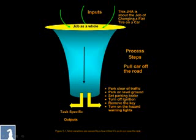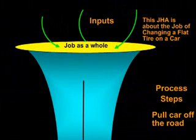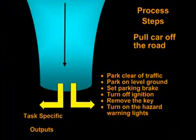A second way of looking at the funnel is that the job as a whole has a number of inputs required. In this case, we're talking about changing a flat tire on a car. There are a number of steps to accomplish that, the first of which is to pull the car off the road. Under pulling the car off the road, there would be task-specific items required, such as parking clear of traffic, parking on level ground, and setting the parking brake.